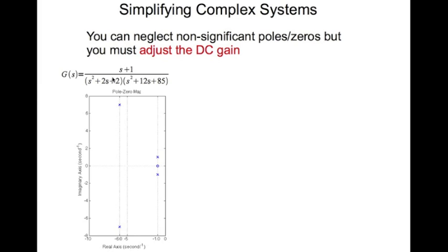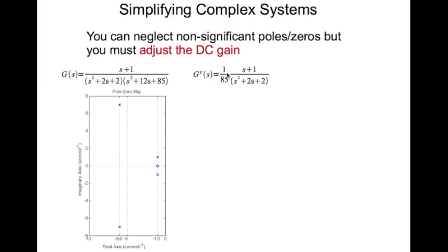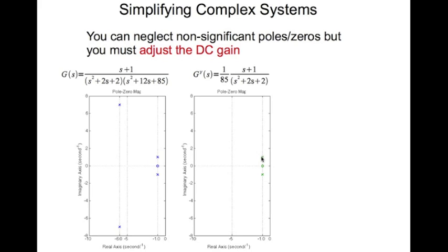Those two poles at minus six are more than five times the distance from the imaginary axis, so you can neglect that term to get a reduced system. However, the DC gain of the reduced system is different, so you have to adjust it by multiplying by a constant so that the DC gain of both systems is the same.